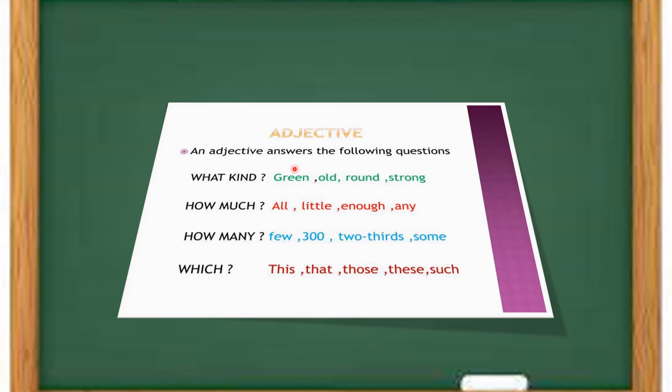Generally, adjectives give more information about the noun by answering the following questions like what kind, how much, how many, which.